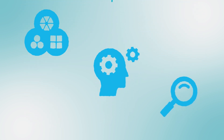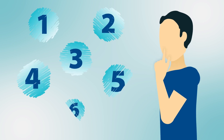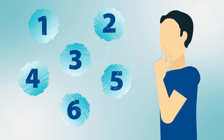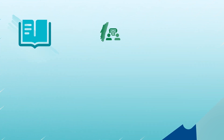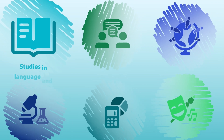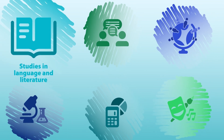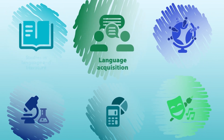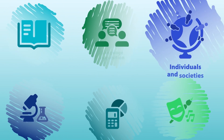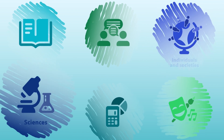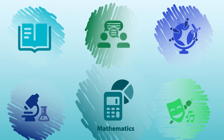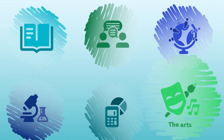Every student also takes six subjects based on their interests and goals. The IB has six subject groups: Studies in Language and Literature, Language Acquisition, Individuals and Societies, Sciences, Mathematics, and the Arts.